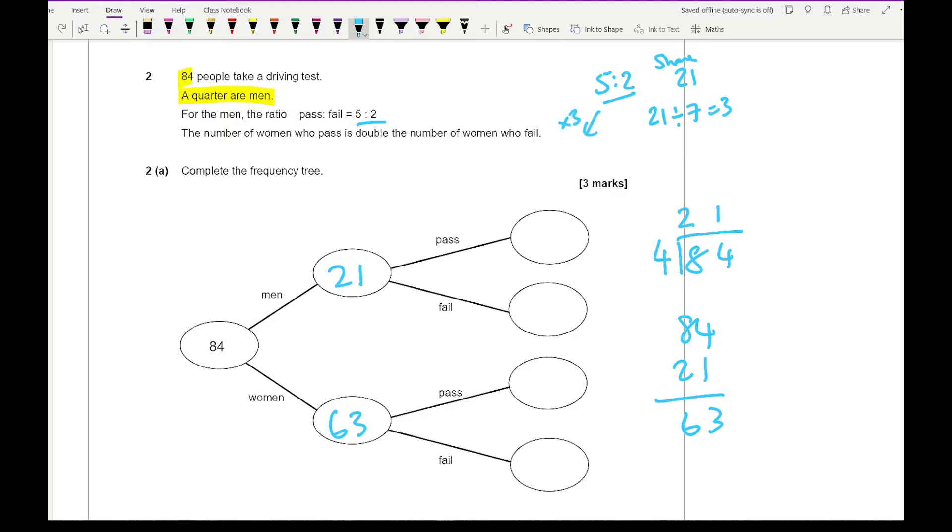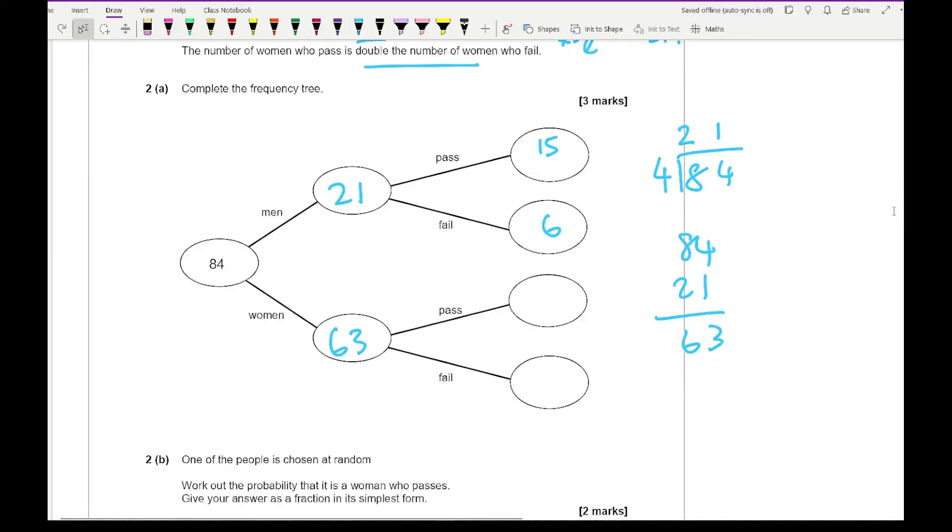Now from this, we can then use the ratio, so we need to share 21 in the ratio of 5 to 2. So here I've got 21 divided by 7, which equals 3. 5 times 3 is 15, and 2 times 3 is 6. Now it then says that double the number of women who pass, than fail. So if we call this 2x, and we call this x, then what I've got is 3x equals 63. So x is going to equal 21. So if x equals 21, that's going to be 21. And the amount of people that fail is going to be 2 times 21, which is 42. And there I've completed my frequency tree.